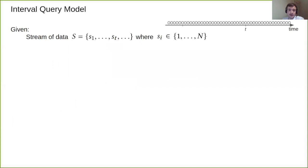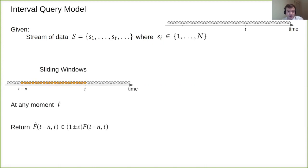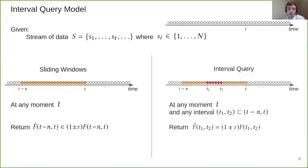Interval query model is very close in nature to sliding window model. Moreover it can be considered as generalization of it as interval query algorithm can answer sliding window queries but not the other way around. At any moment T sliding window model requires to return approximation of some target function F computed on the last N updates. Interval query model at any moment T given time interval T1 T2 which should be within the last N updates, returns approximation of the target function F computed only on the updates within this time window T1 T2. Obviously if you choose T1 T2 being T minus N and T then you get the sliding window query.